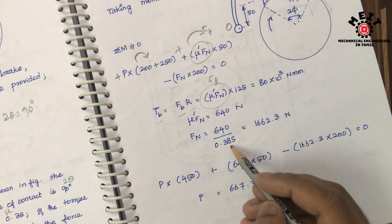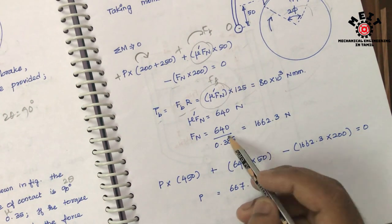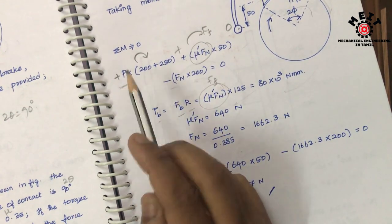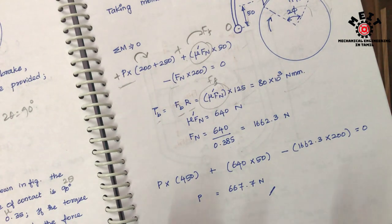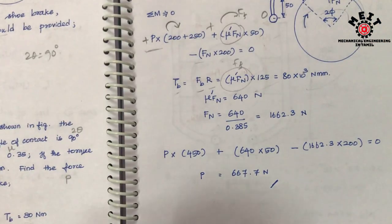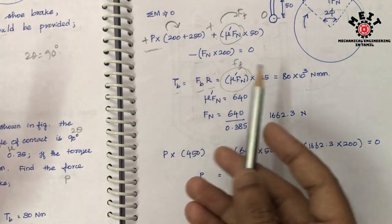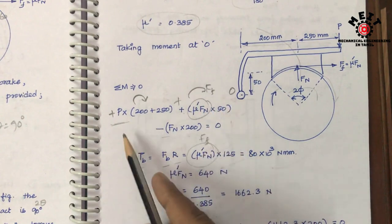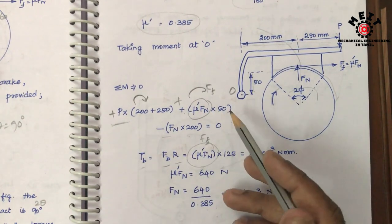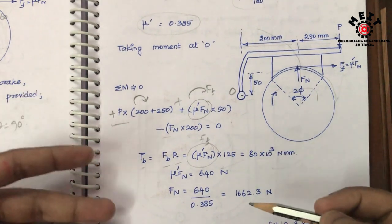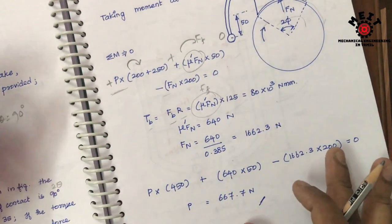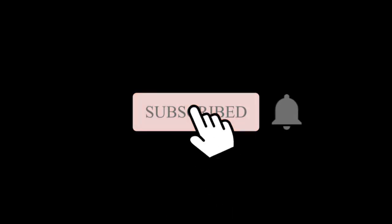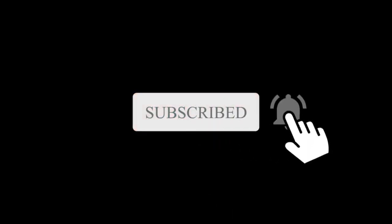With mu dash equal to 0.385, F1 is calculated. Substituting F1 back into the moment equation gives us P. So the moment equation and the torque equation together complete the solution. Thank you.